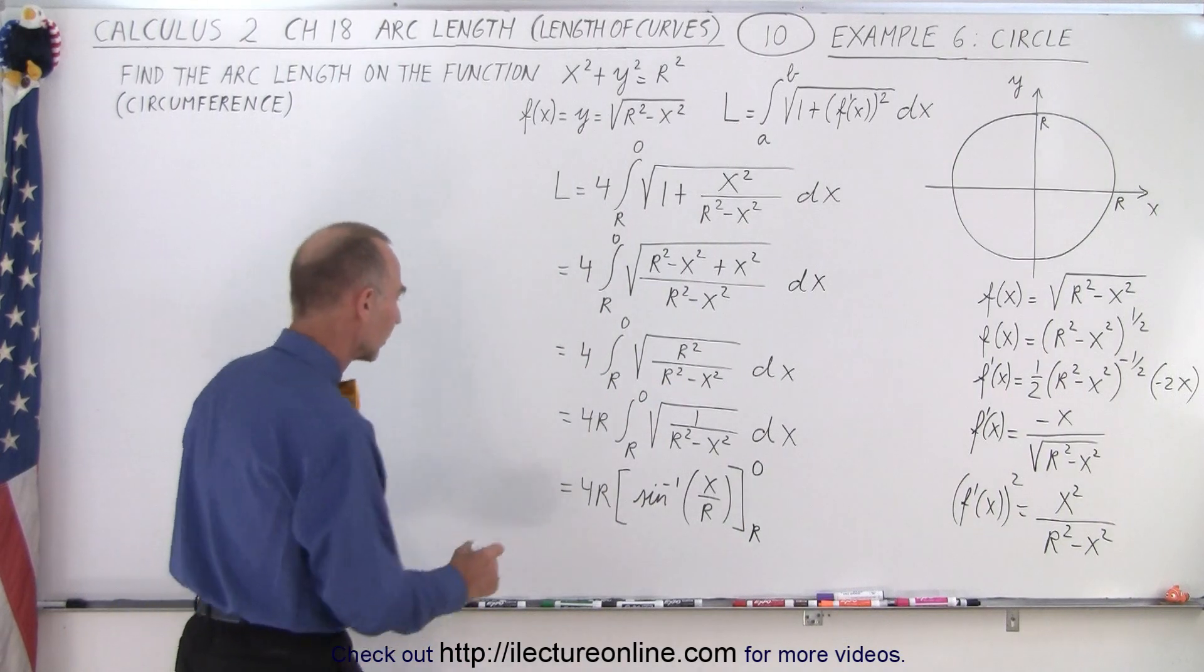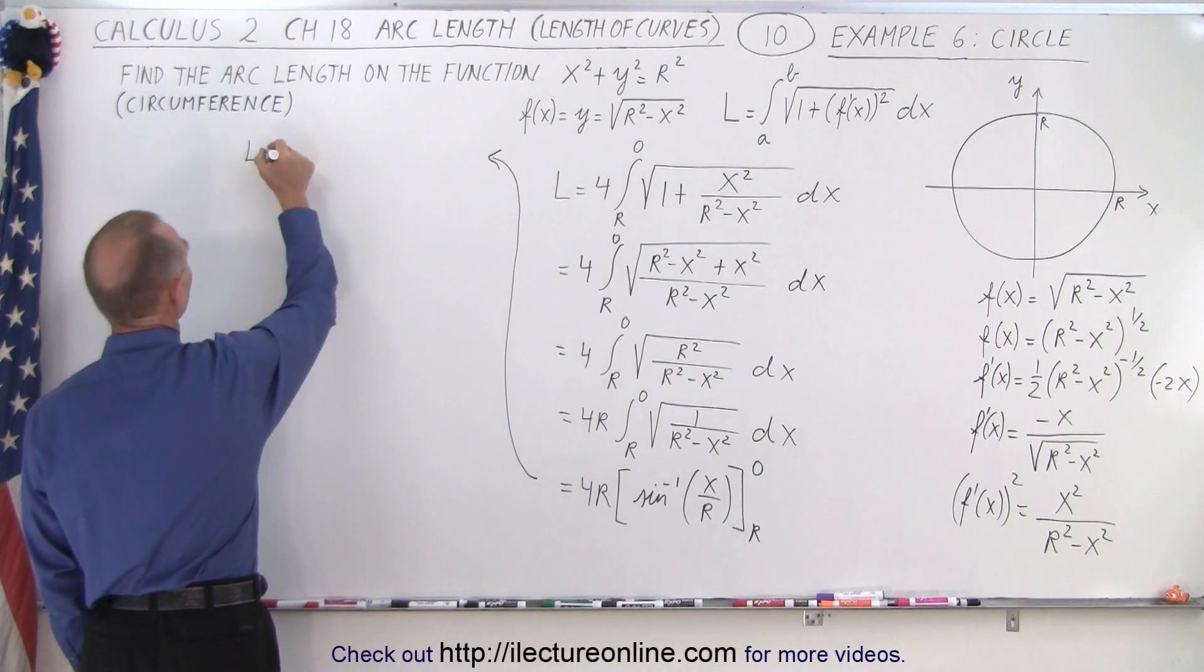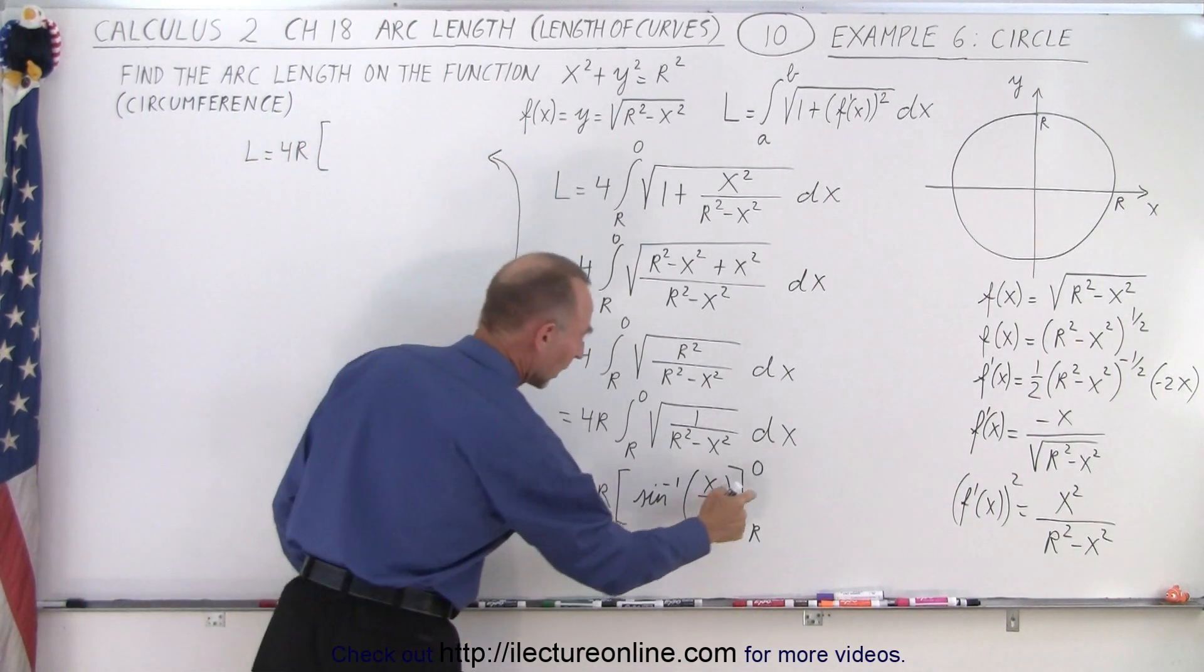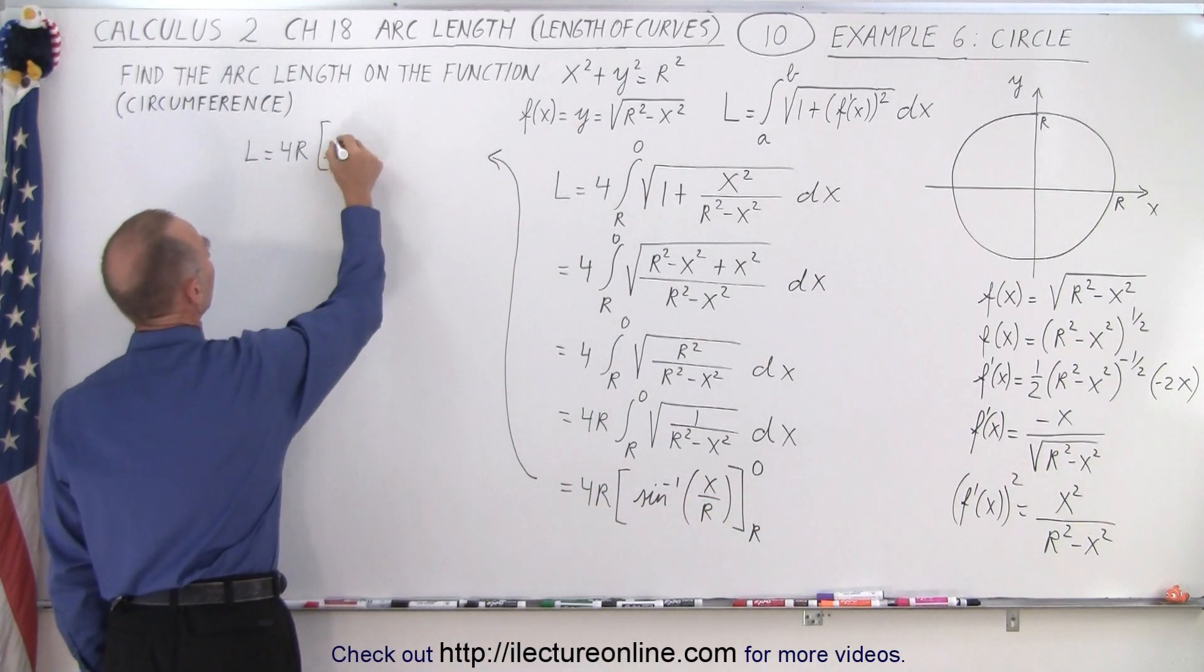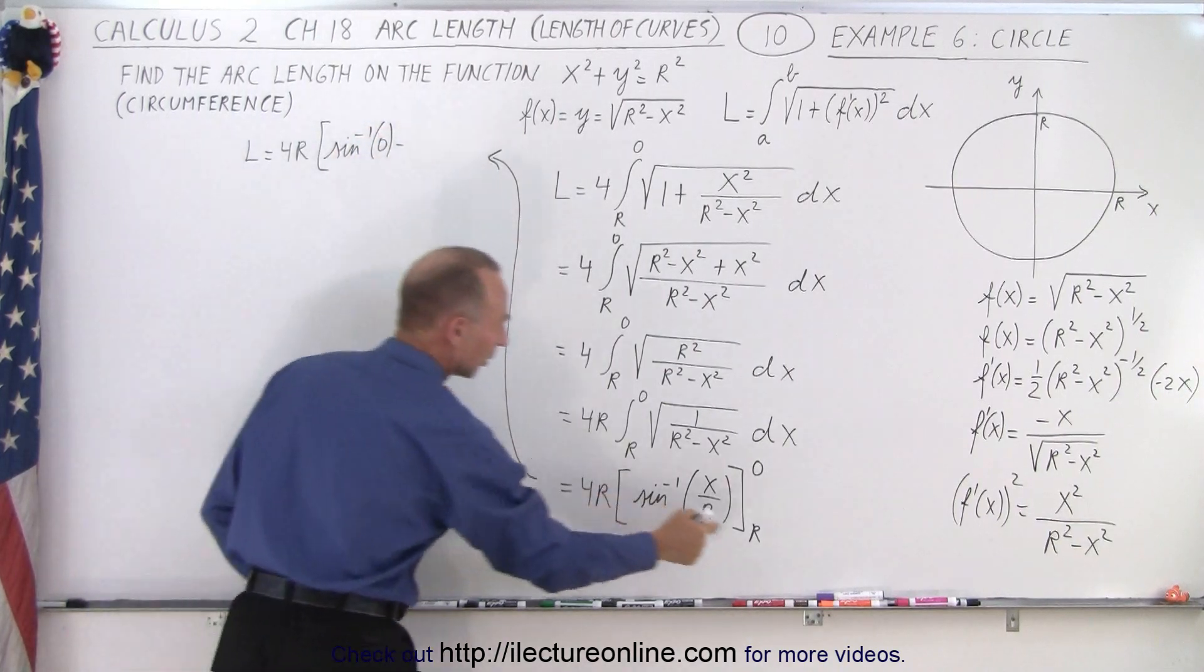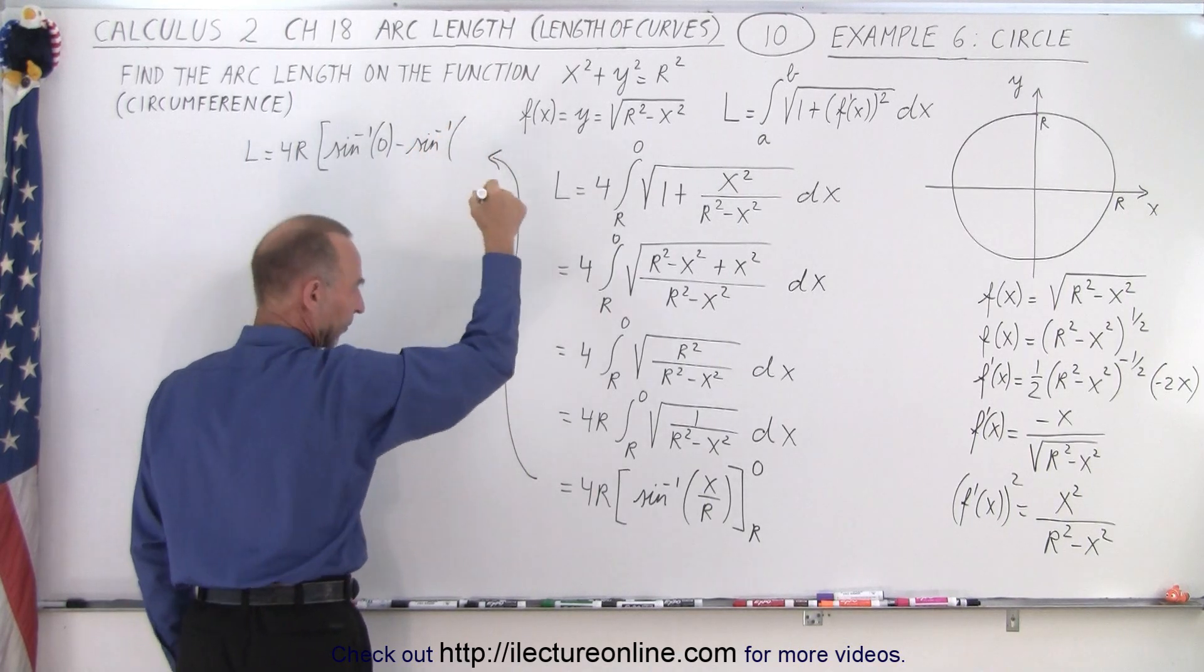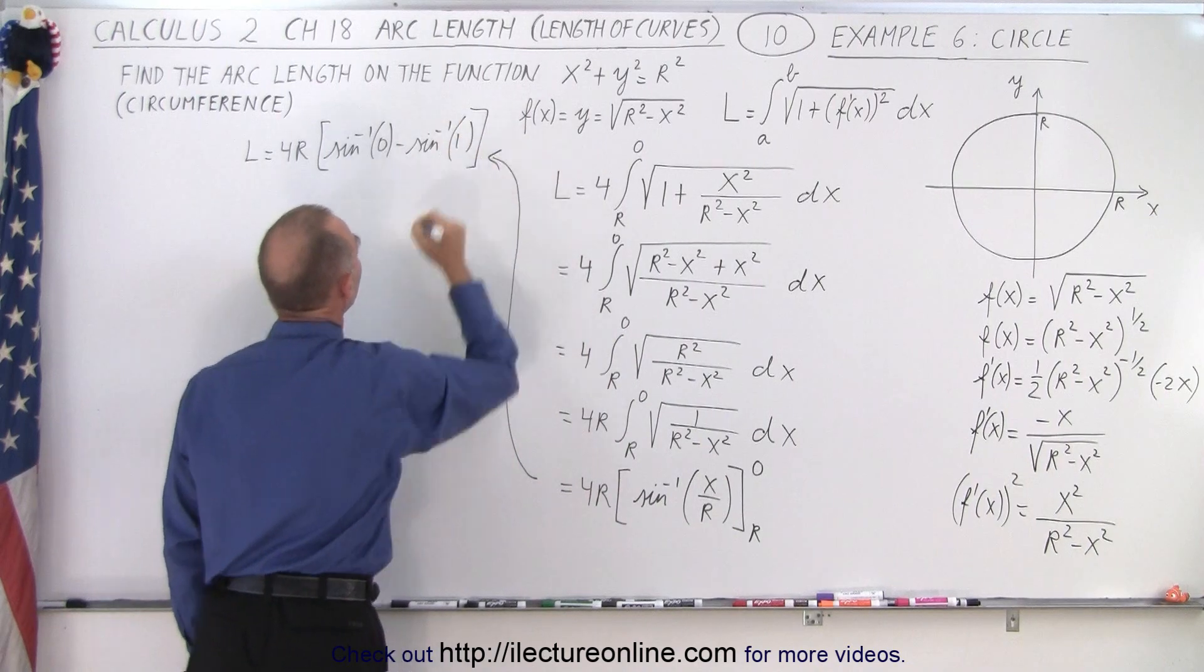All right, let's come up here to evaluate that. So that means that the length is equal to 4 times r times, when plugging the upper limit, we get the inverse sine of 0. So the inverse sine of 0 minus, when plugging the lower limit, we get the inverse sine of, that would be r over r or 1.